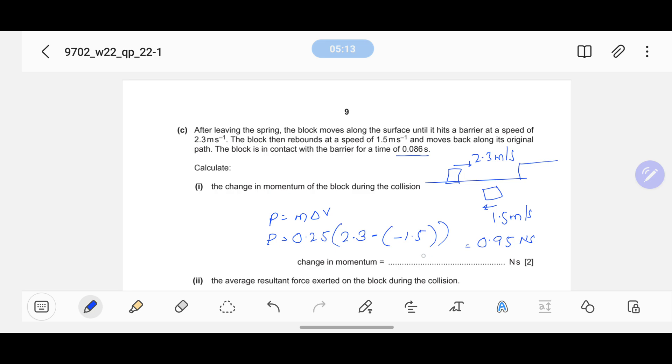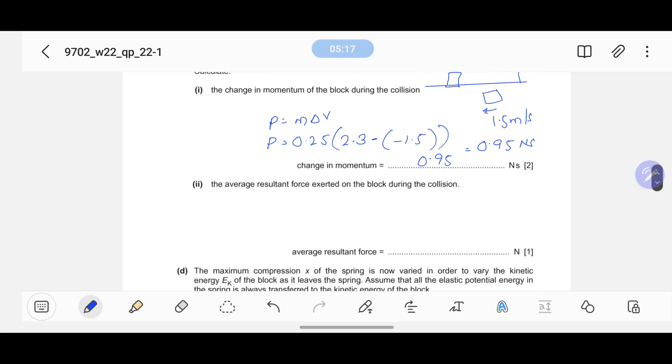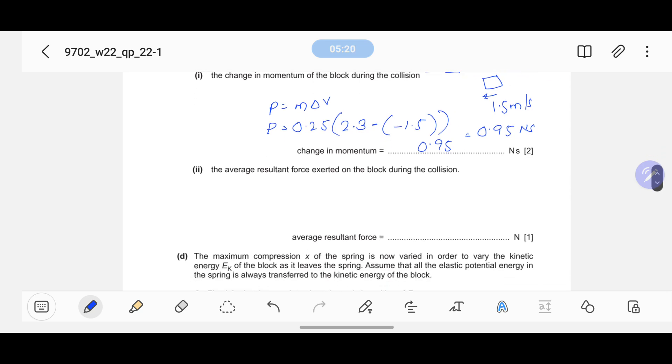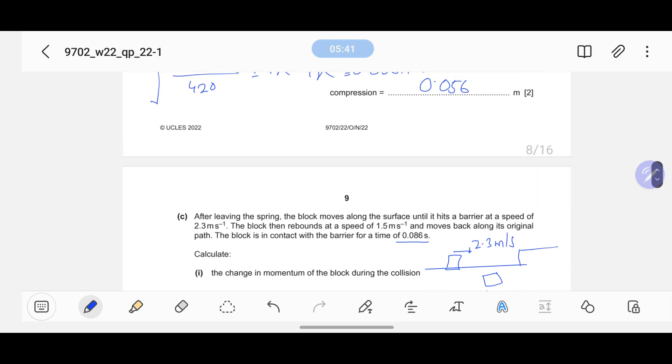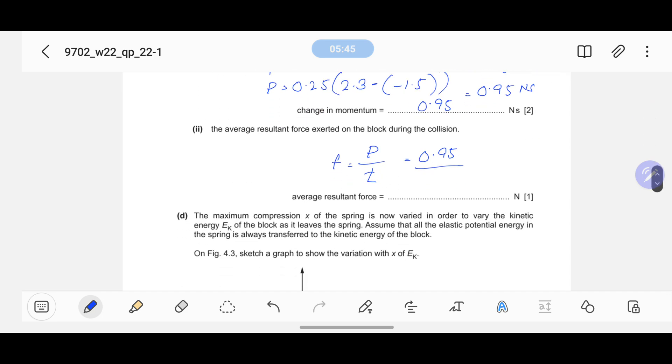Part C2: the average resultant force exerted on the block during the collision. Force has a formula of momentum, that is p over t. The value of momentum is 0.95 as we have stated earlier, and time was already known, that was 0.086 seconds. The average force will be somewhat 11.05. I can round it up to two significant figures, that will make it 11 newton.